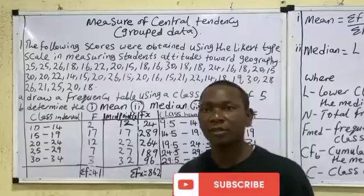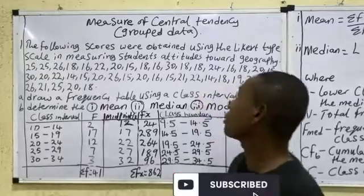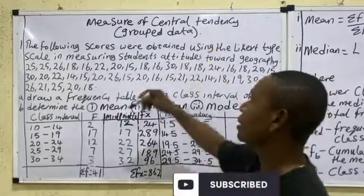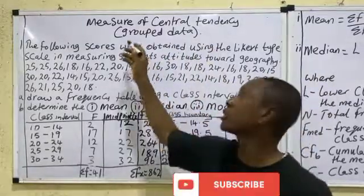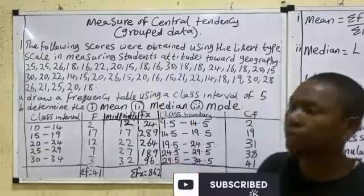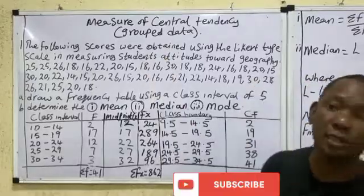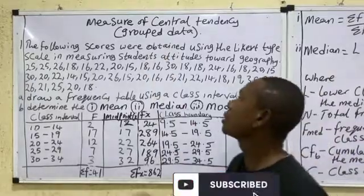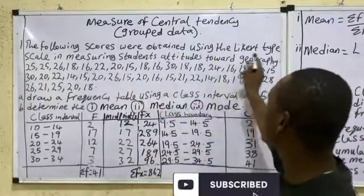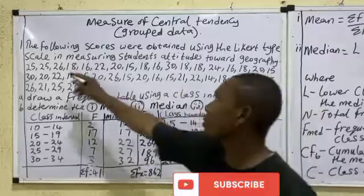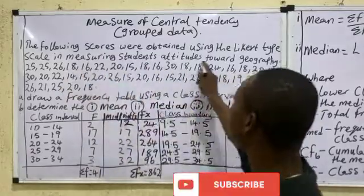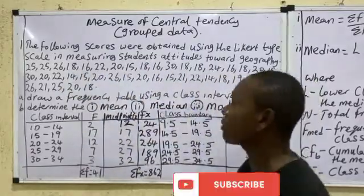Welcome to Science Access. In today's class we'll be talking about measures of central tendency. I will be dealing with grouped data, measuring student attitude towards geography using the Likert type scale.